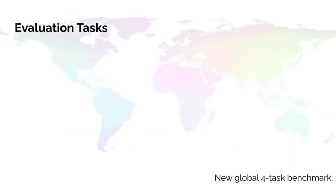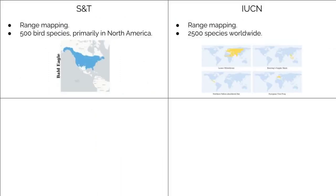Our work also introduces a new four-task benchmark for species mapping and spatial learning. Two of the tasks, S&T and IUCN, are species mapping tasks where expert range maps are used as ground truth. Collectively, they cover around 3,000 species.